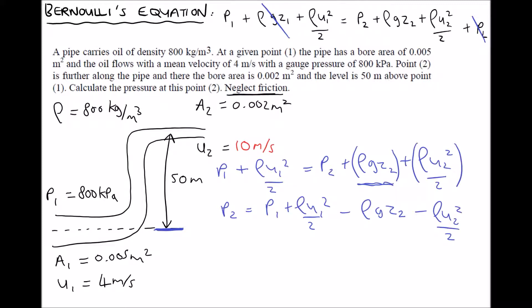Now it's just a case of plugging in our numbers because the pressure at position 2 is P1. Well P1 is 800 kilopascals or 800,000 plus rho U1 squared over 2. Well we have our density 800. We have U1 as 4. We have rho GZ2 so minus 800 times gravity 9.81 times Z2 which is 50 meters. And then we need to minus rho U2 squared over 2. So 800, U2 we said was 10 over 2.